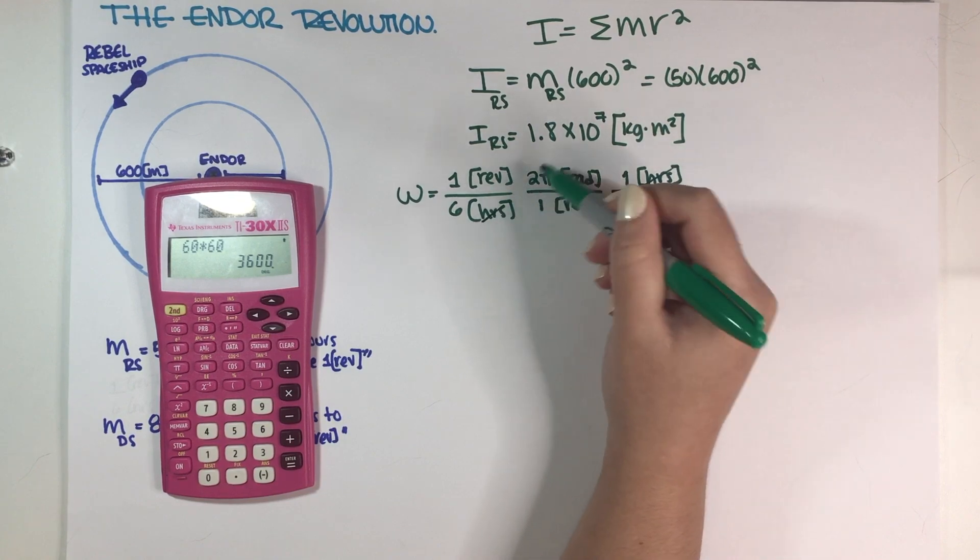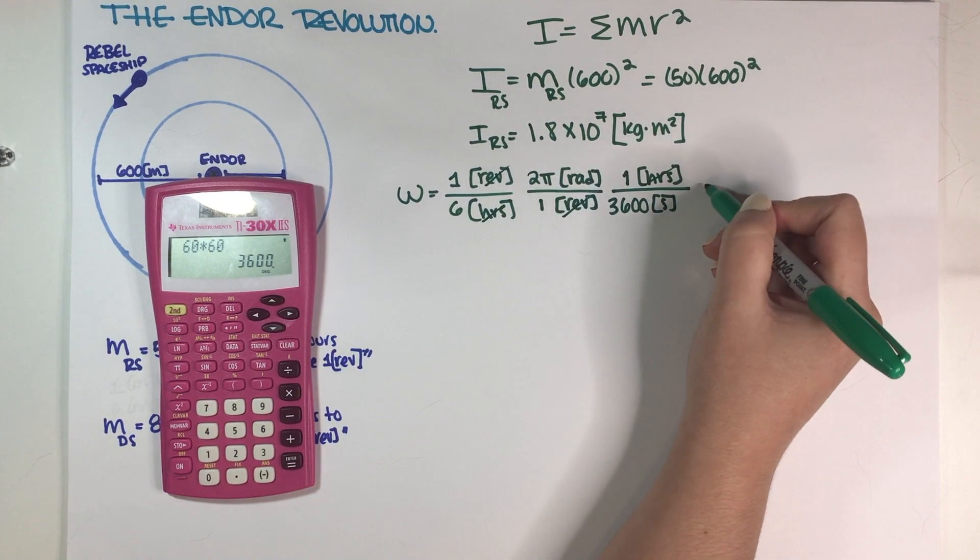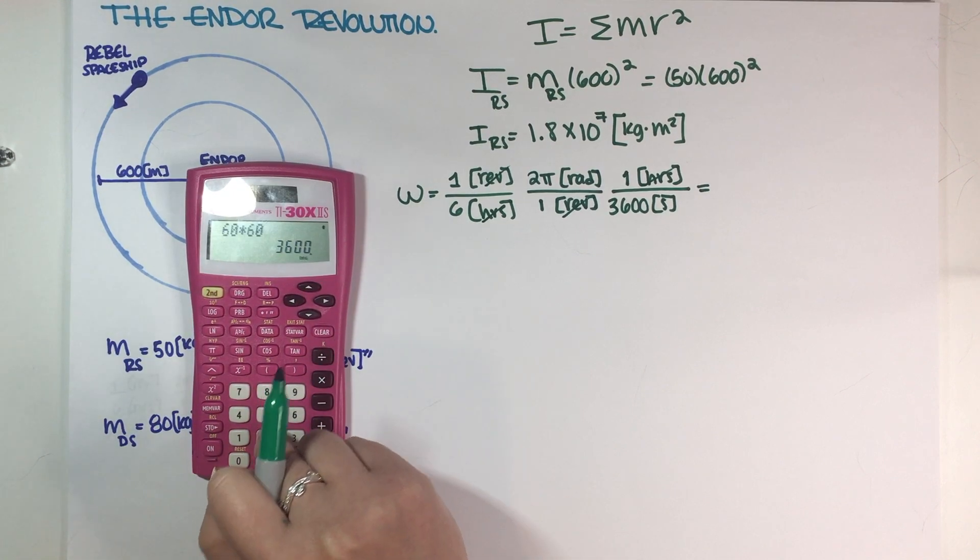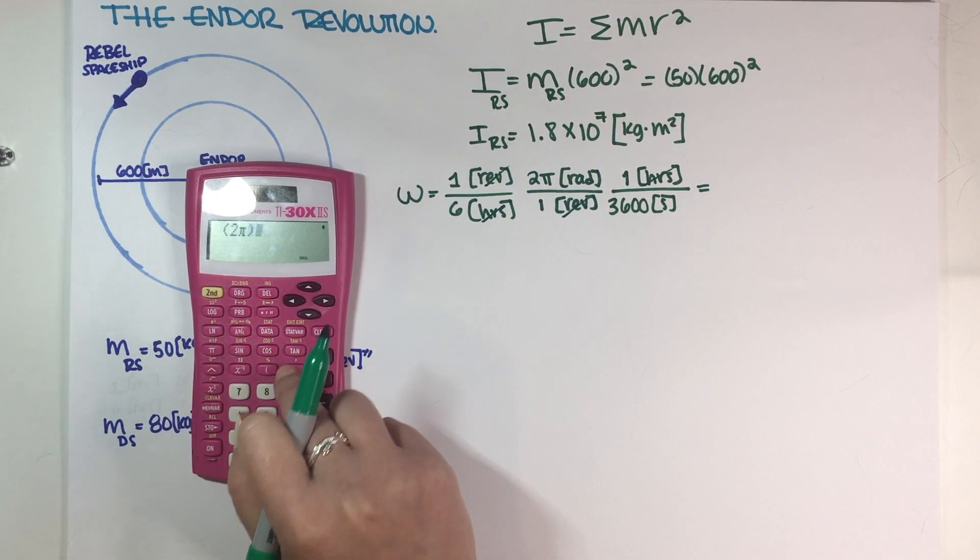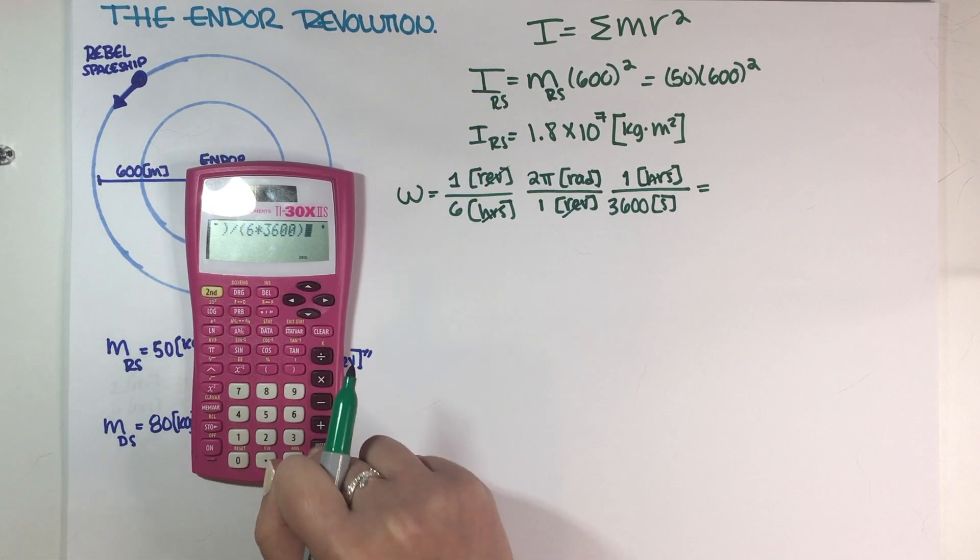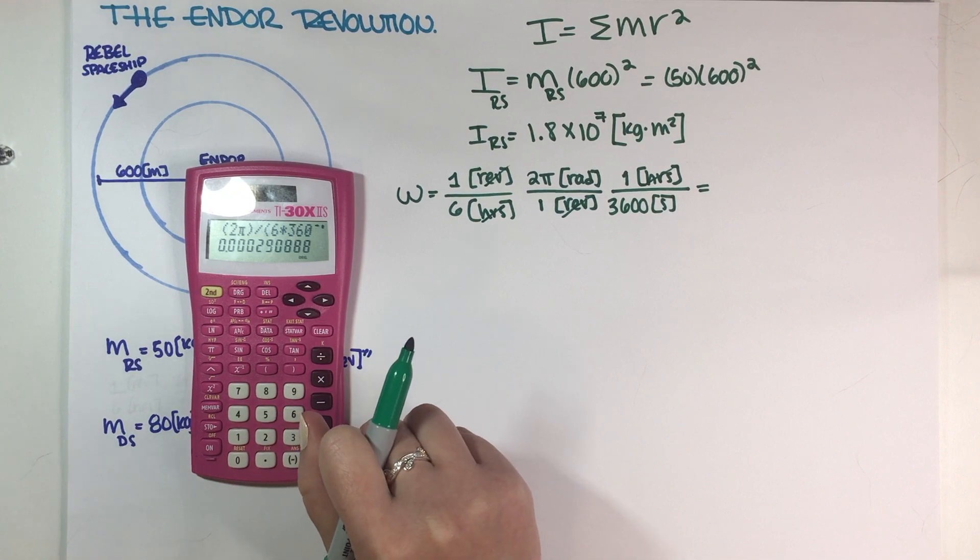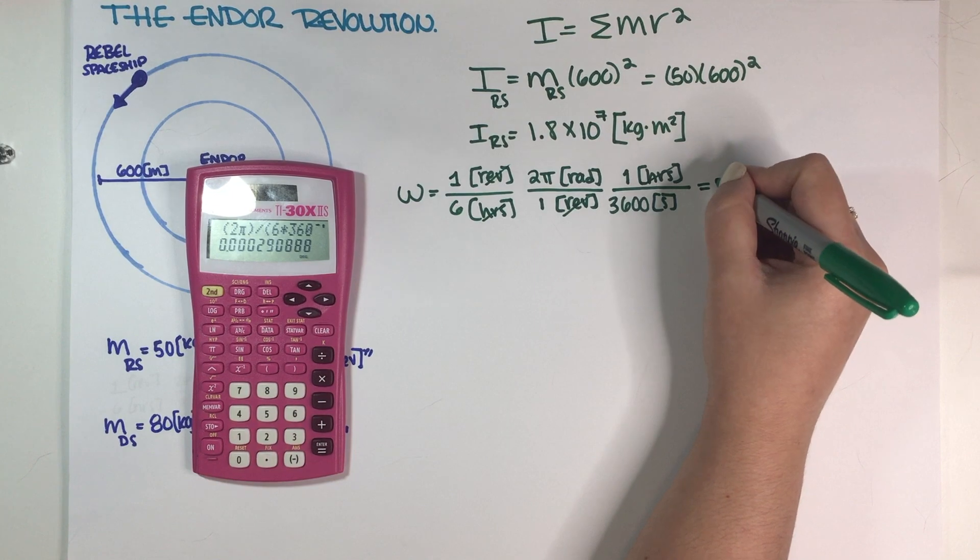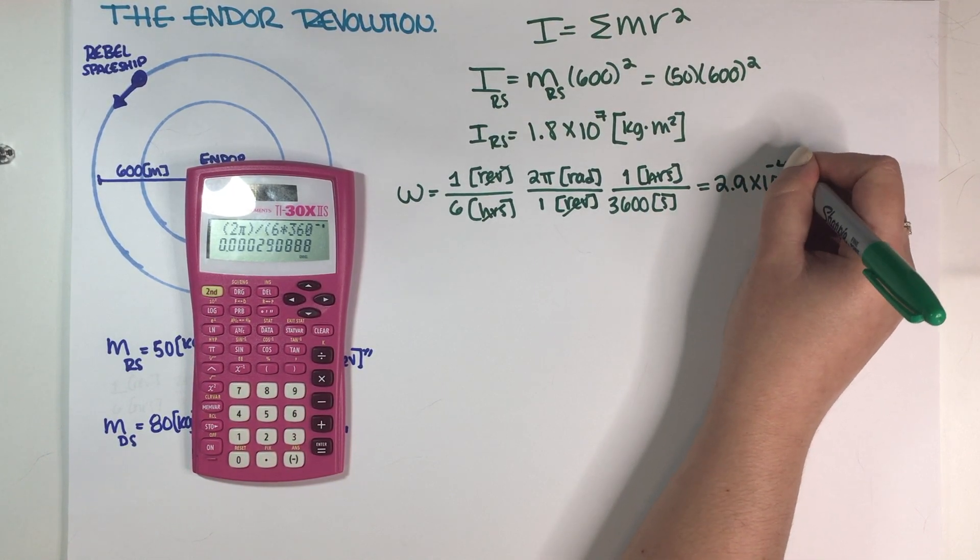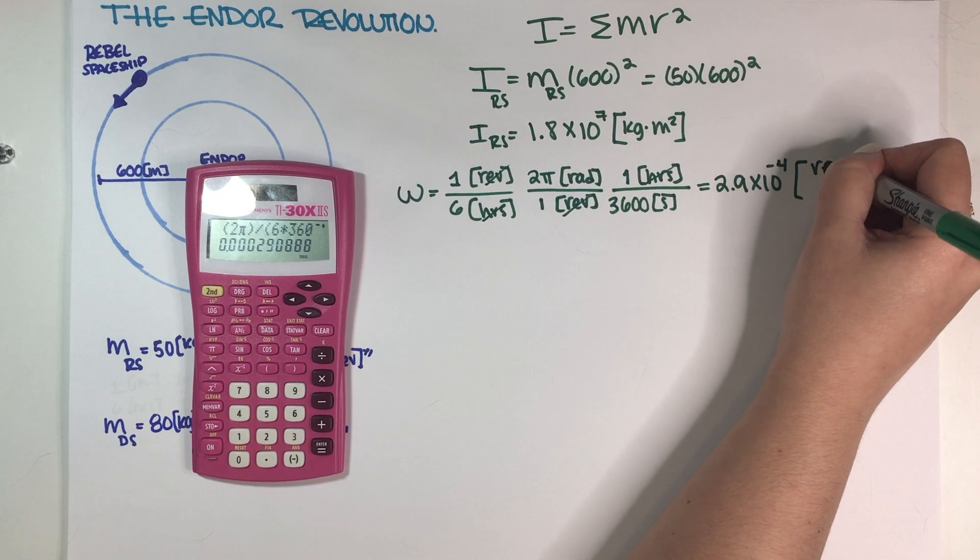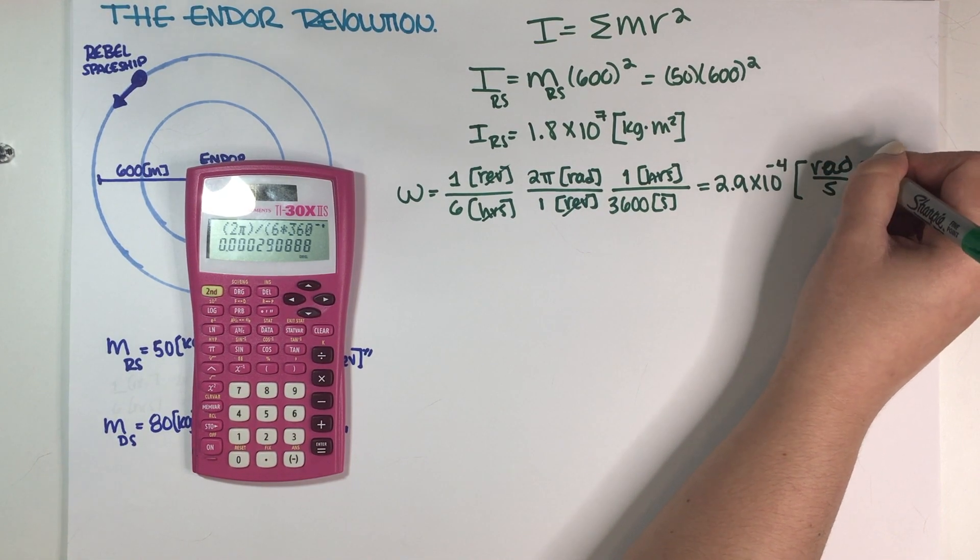This cancels hours, this cancels revolutions. Let's do 2 times π divided by 6 times 3600. The final answer is 2.9 times 10 to the negative 4 radians per second.